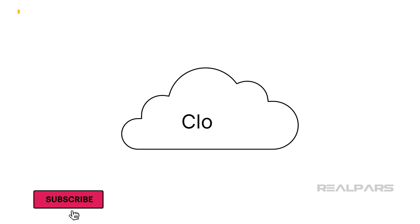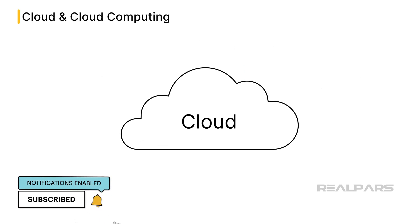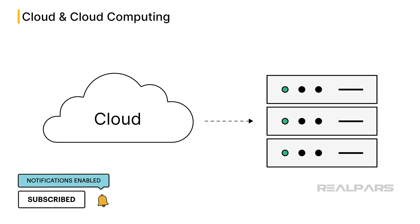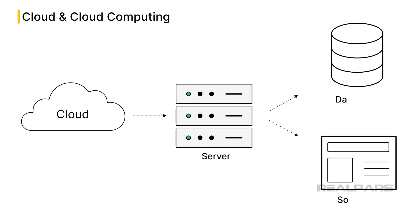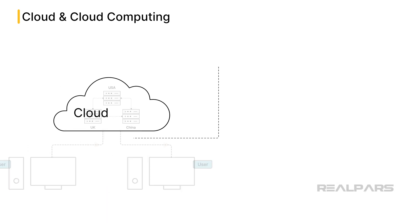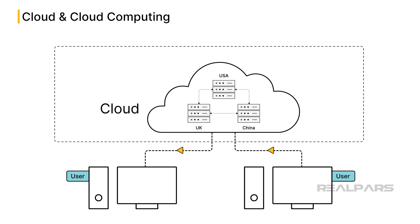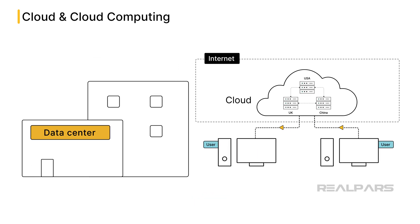Let's start by discussing the cloud. The cloud refers to physical devices called servers loaded with software and databases. These cloud servers are accessed via the internet — simply stated, no internet, no cloud. Cloud servers are physically located in brick-and-mortar data center facilities.